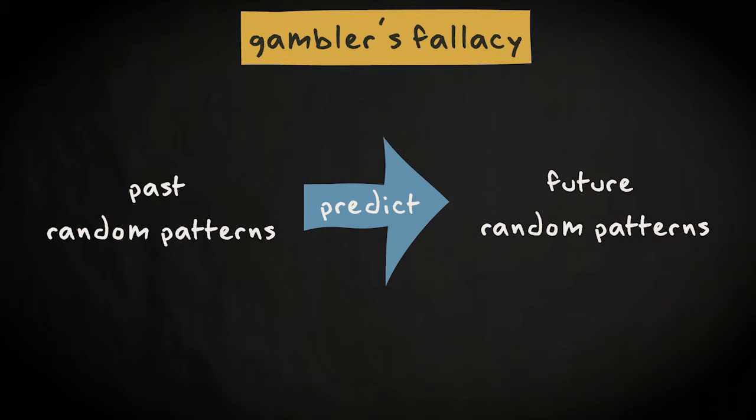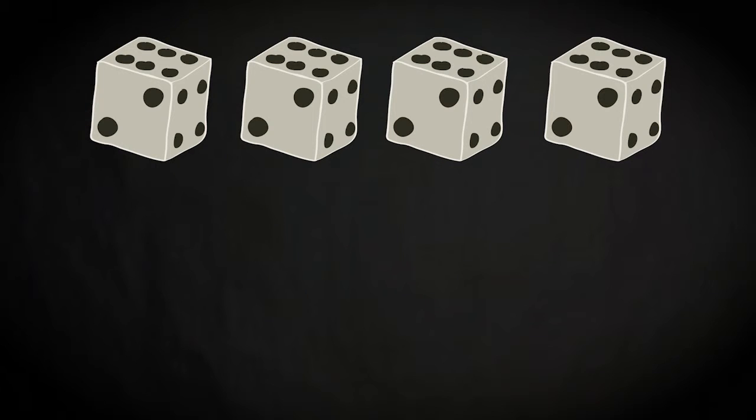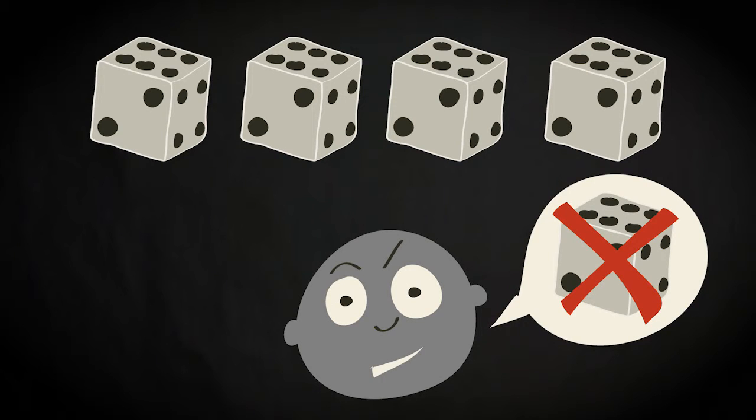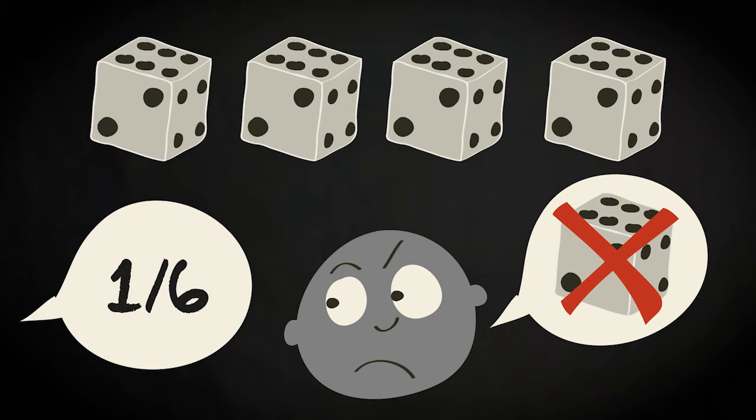And who doesn't recognize this? If you have thrown a six four times in a row with a die, it feels as if it's going to be very unlikely to throw a six again the fifth time. Yet the probability of this outcome was, and continues to be, one-sixth.